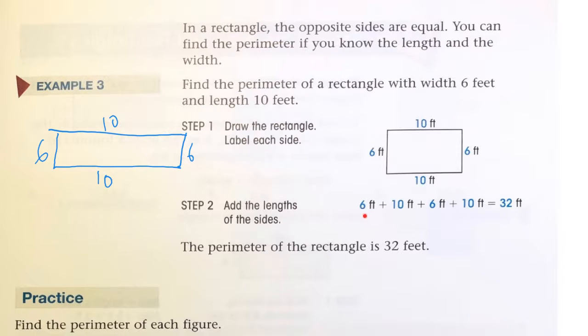You add up the lengths of all the sides, and in this case it's 32 feet for the perimeter.